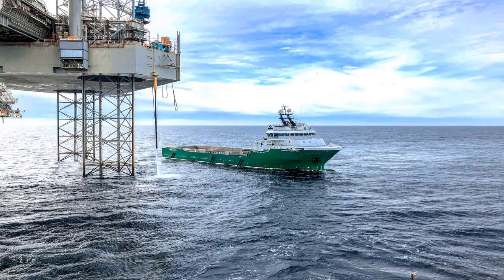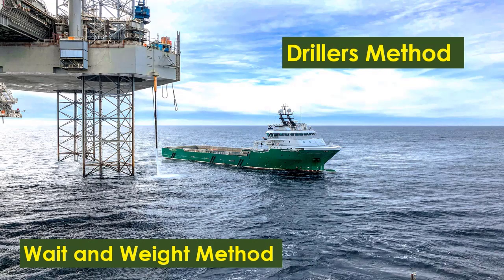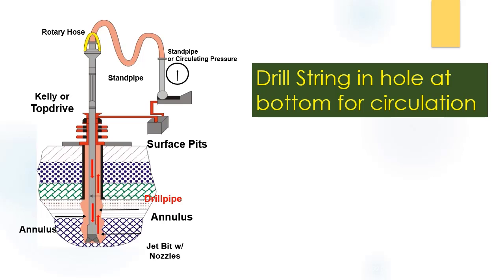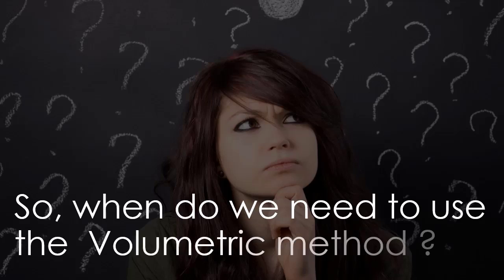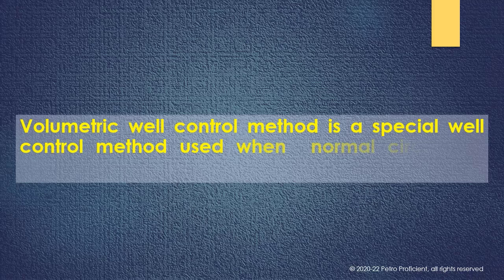During secondary well control, the two commonly used well control procedures are drillers method and weight and weight method. These methods require a drill string to be in the well at the bottom and mud pumps for circulating the kick out. So, when do we need to use the volumetric method? Volumetric well control method is a special well control technique used when normal circulation cannot be done.